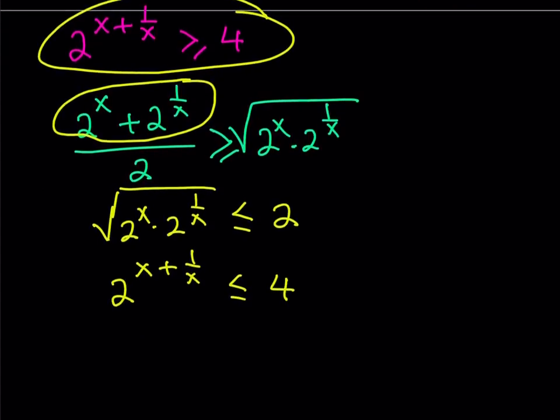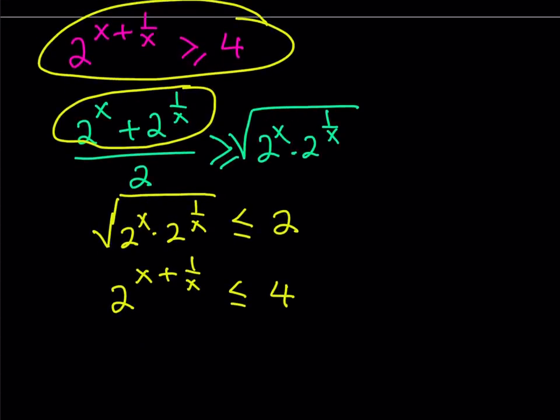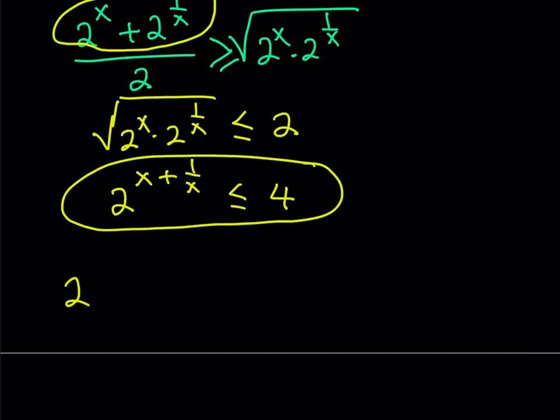Now what is that supposed to mean? Well, we kind of have like two contradicting statements, but this means that 2 to the power of x plus 1 over x is supposed to equal 4. Okay, now what is that supposed to mean? Let's talk about that. Well, it just means that x plus 1 over x is equal to 2. So what?